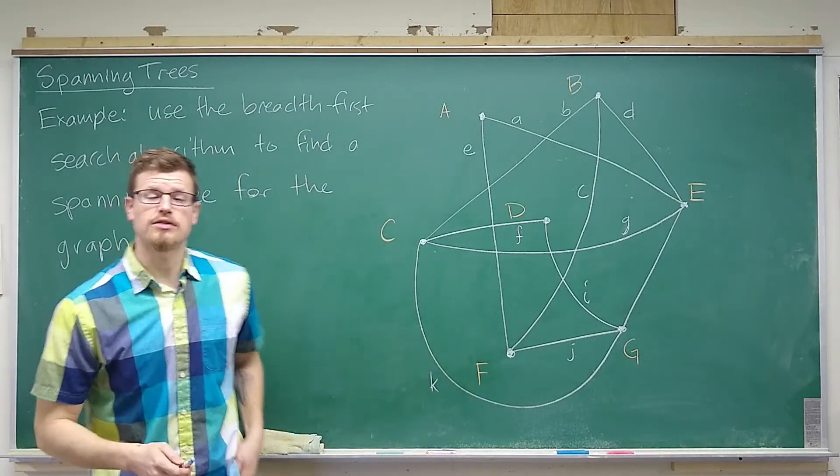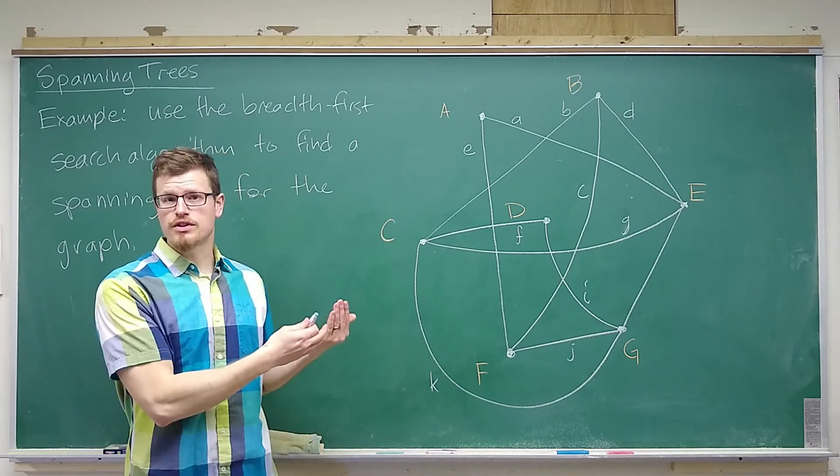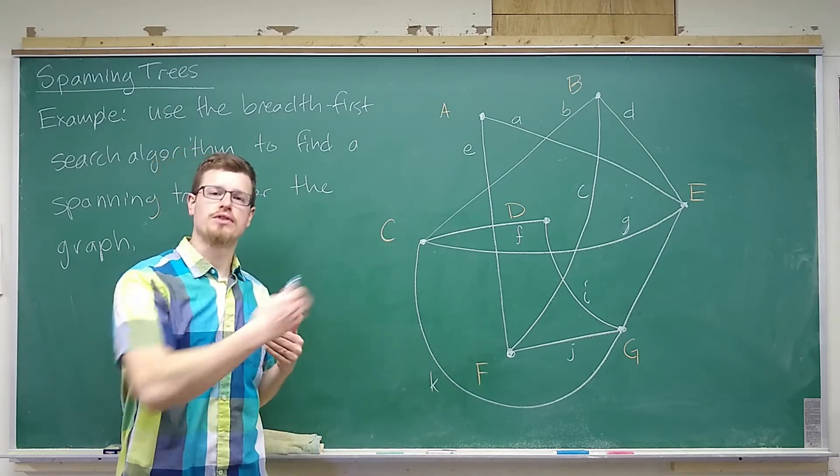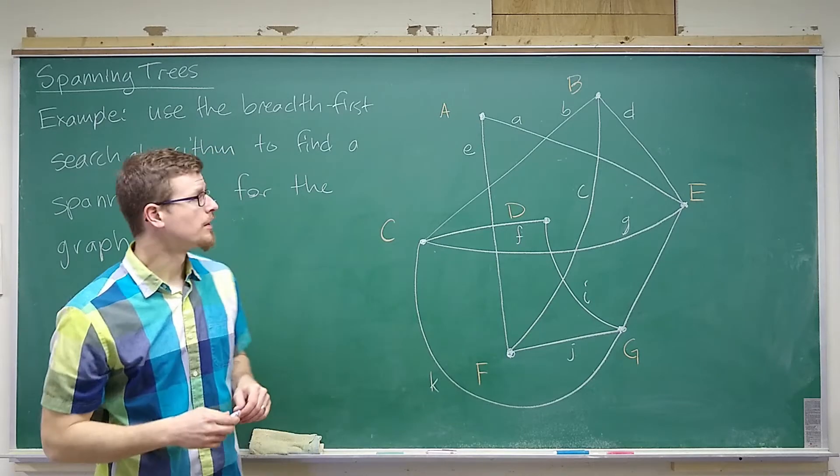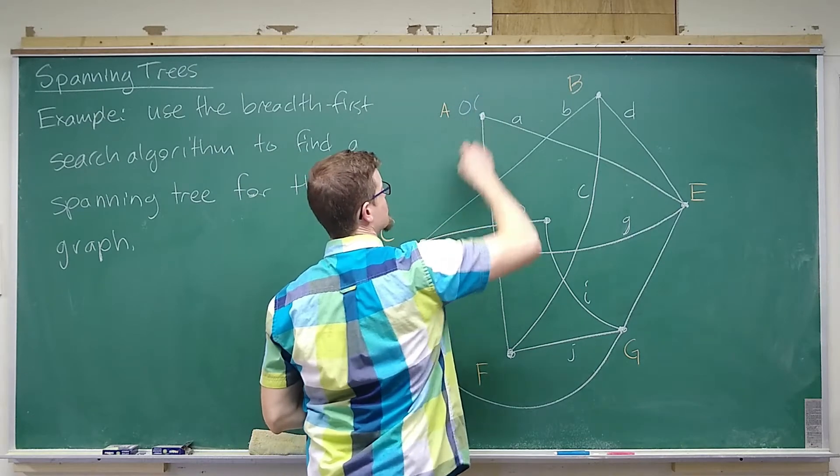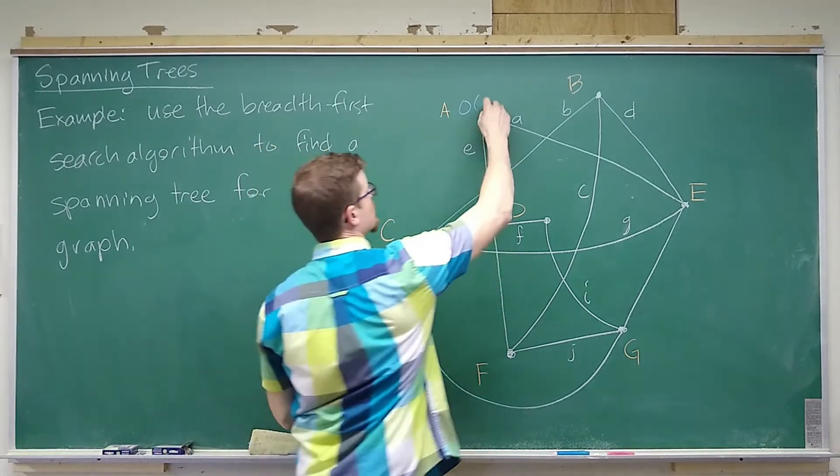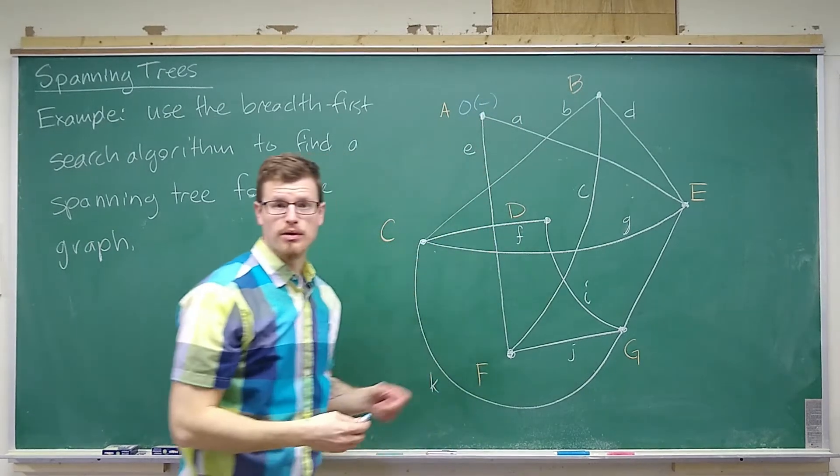To use the breadth-first search algorithm, we need to choose a vertex and then find the distance from that vertex to all other vertices. So let's choose A. Of course A is a distance of zero from itself, and the predecessor in the shortest path is nothing because it's just the point A.